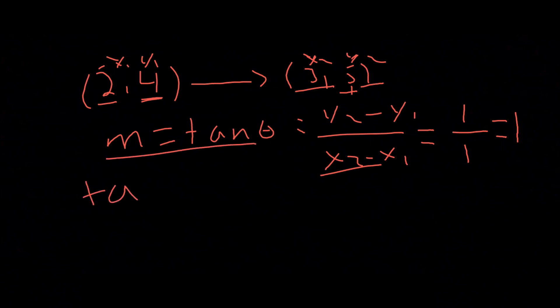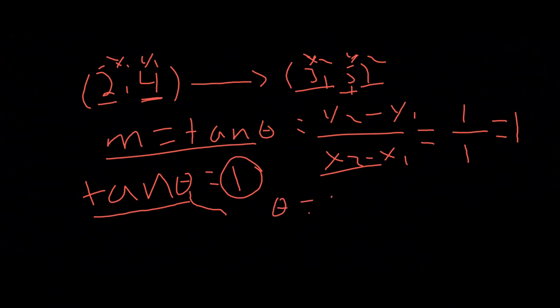Now we take the inverse tangent: tan theta equals 1. Using a calculator, tan inverse of 1 gives us 45 degrees. So the slope angle of the vector is 45 degrees.